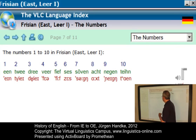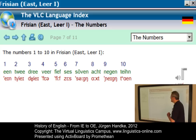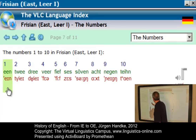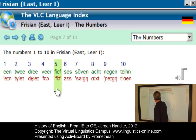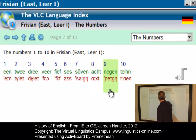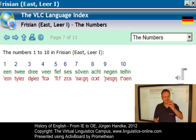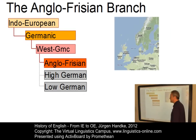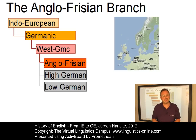Here we have the numbers from 1 to 10 in East Frisian, spoken in the north of Germany, and we can compare them with present-day English. The close resemblance illustrates the linguistic proximity between Frisian and English within the Anglo-Frisian group.